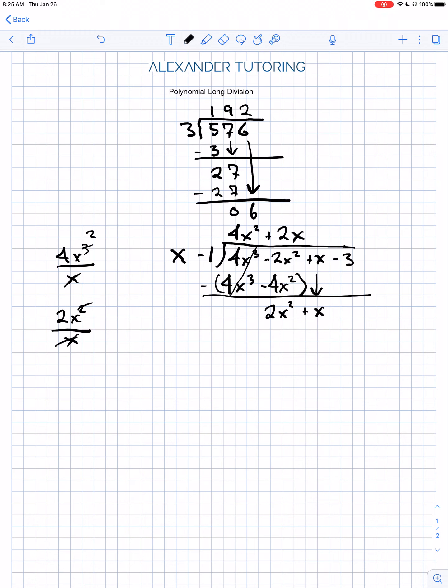So 2x times x is 2x squared. We know we're on the right track because these two will always be the same. And then 2x times negative 1 is negative 2x.